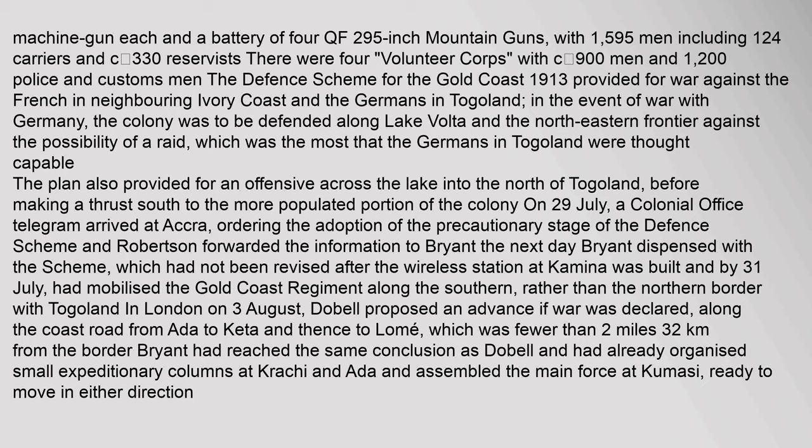The defense scheme for the Gold Coast of 1913 provided for war against the French in neighboring Ivory Coast and the Germans in Togoland. In the event of war with Germany, the colony was to be defended along Lake Volta and the northeastern frontier against the possibility of a raid, which was the most that the Germans in Togoland were thought capable. The plan also provided for an offensive across the lake into the north of Togoland, before making a thrust south to the more populated portion of the colony.